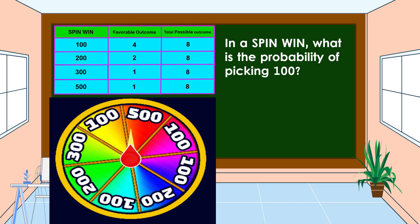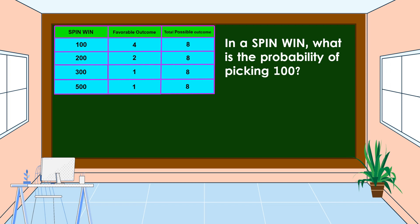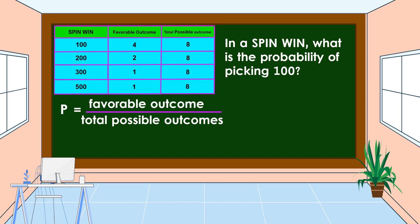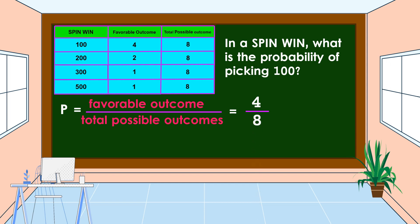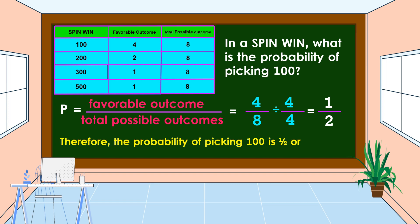In a Spin Wind, what is the probability of picking 100? The formula to find the probability is: P is equal to favorable outcome over total possible outcomes. So in our chart, the favorable outcome for 100 is 4, and the total possible outcomes is 8. Let's reduce 4/8 to its lowest term. 4 and 8 are both divisible by 4. 4 divided by 4 is equal to 1, and 8 divided by 4 is equal to 2. Therefore, the probability of picking 100 is 1/2 or 50 percent.